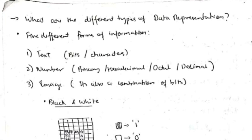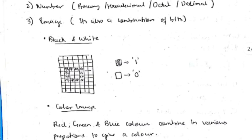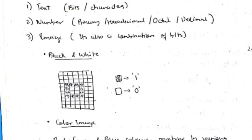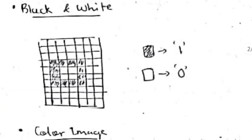What are the different types of data representation? Data is of three types: first is text, meaning letters represented in bits; second is numbers, like binary, hexadecimal, octal, and decimal; and third is images, which can include videos. Let's see how images are actually stored inside memory.